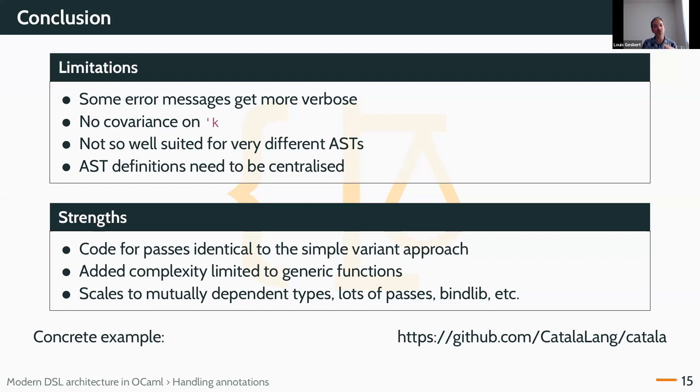When you have very different ASTs, of course, maybe you don't want to merge them all, so we still have a different surface AST, for example, in Catala. This works when you have small passes. And, of course, this forces you to centralize all the definitions for your ASTs, which might not be a bad thing, but we don't have a choice anymore.